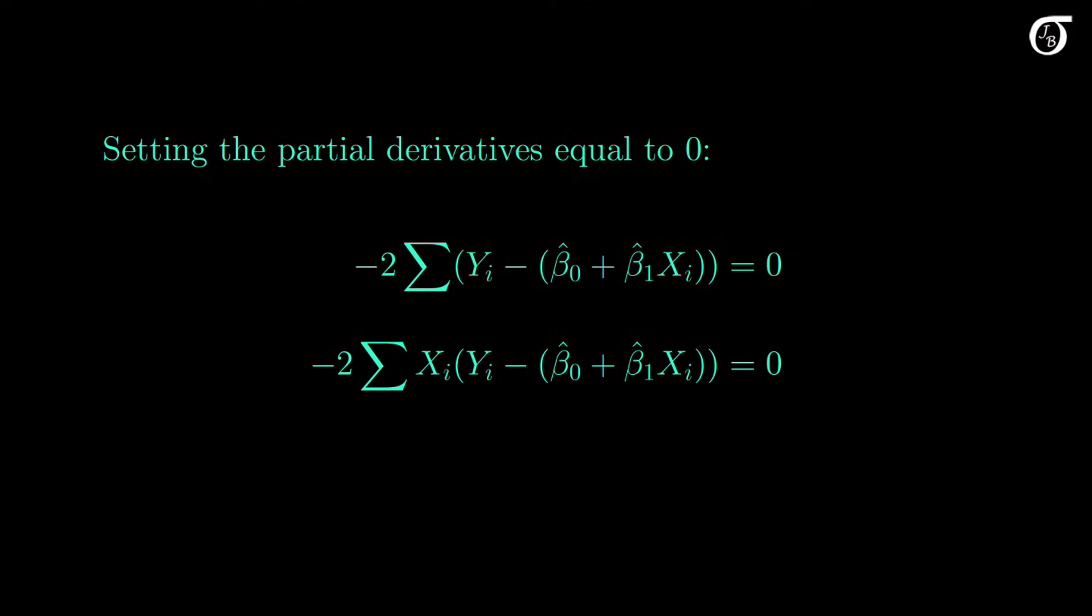How do we do that? First we'll get an expression for beta0 hat, and that expression will involve beta1 hat, and we'll substitute that into the other equation and solve for beta1 hat. Note that we can simplify this right away by dividing by minus 2, as that term disappears because the other side is 0. Let's solve the first equation for beta0 hat.